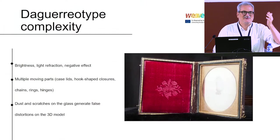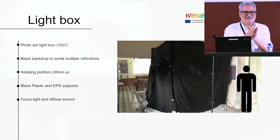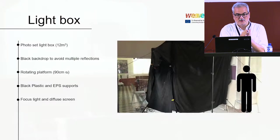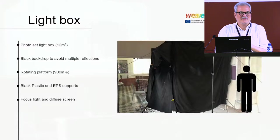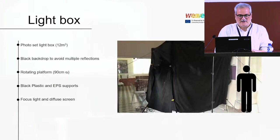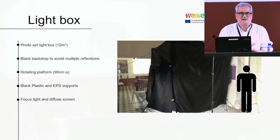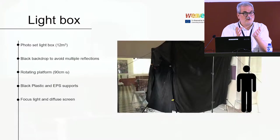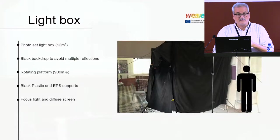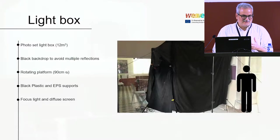We had to figure out how to manage this. It's very important that the daguerreotype doesn't reflect any surface that is not black. So we made a huge light box — about 3 meters high. We had a black backdrop and the rotating platform was inside. We also had to design specific jigs and supports, because the variety of shapes and the morphology is so wide. There was also a lot of manual work — it's a digital project where we have done a great deal of manual work as well.